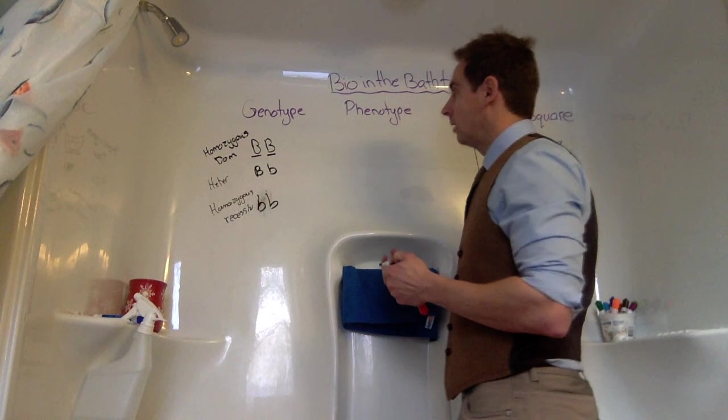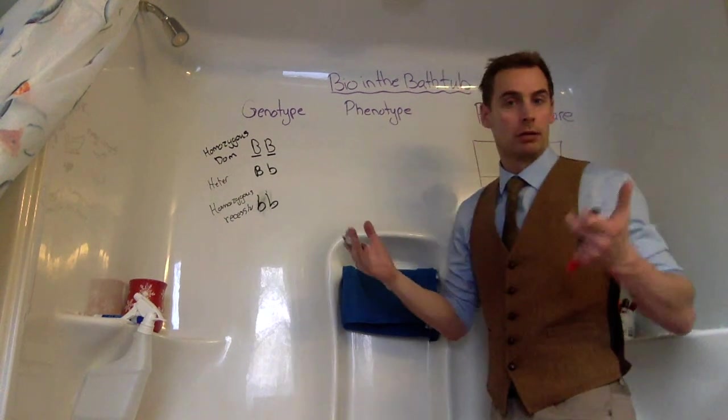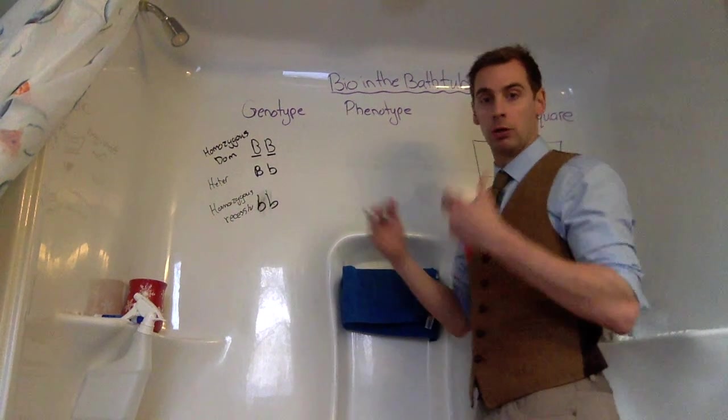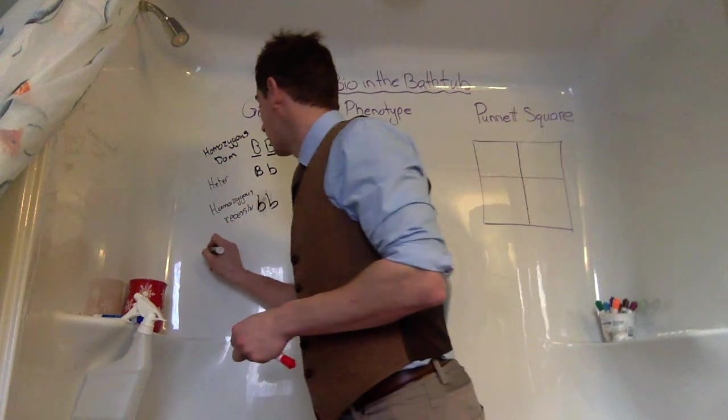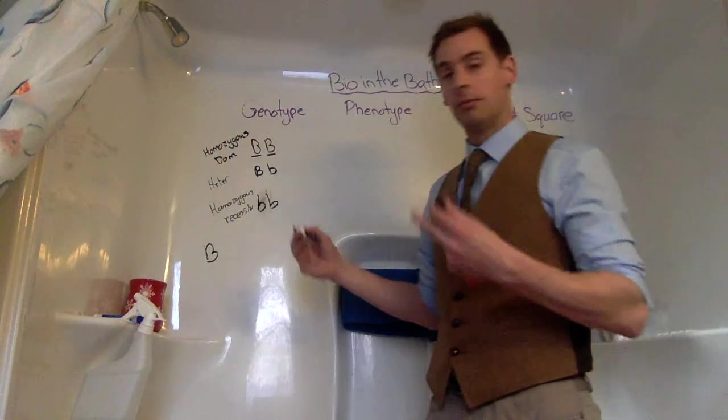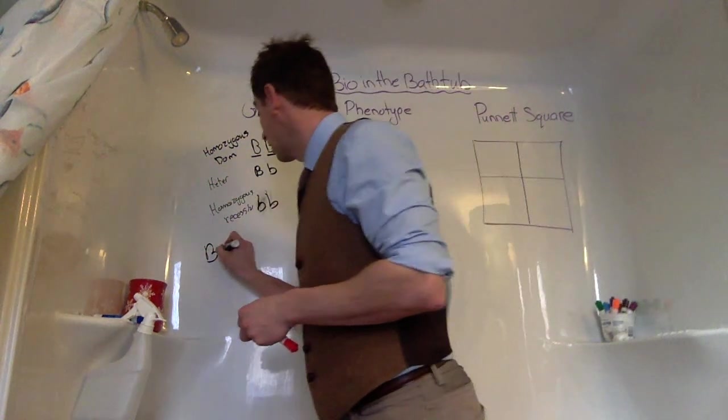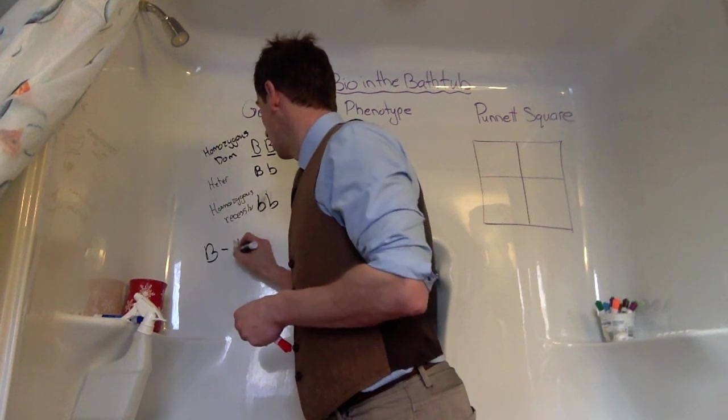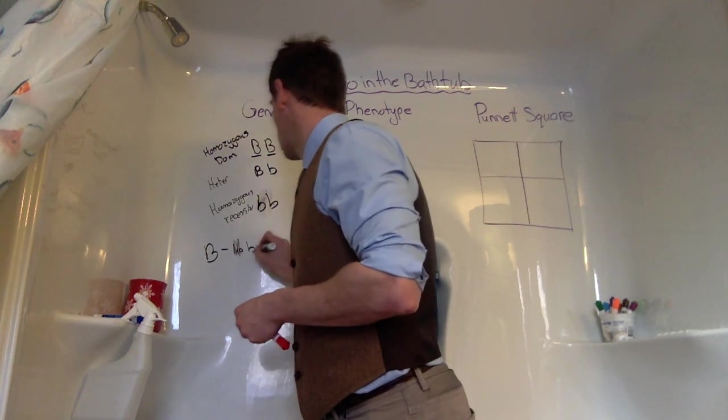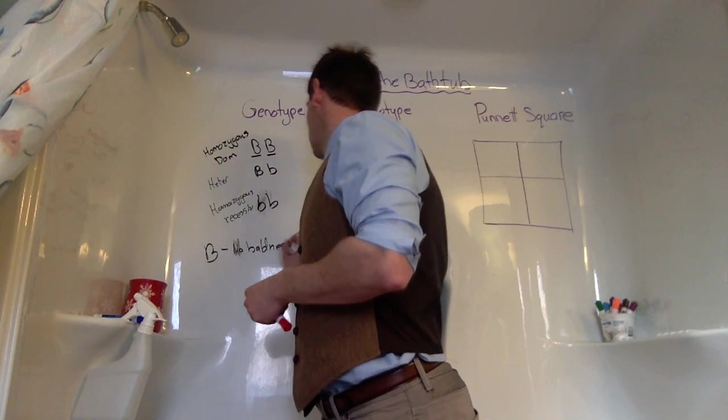So I'm going to just use an example. Let's use baldness. Okay, so if we have B, which is our dominant trait, that's going to be dominant for no baldness.